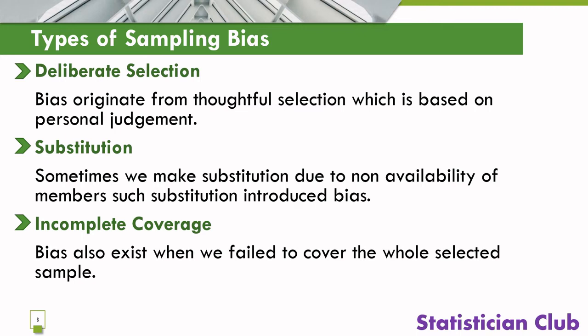Substitution: sometimes we make a substitute due to non-availability of members, and such a substitute introduces bias. Because if your substitute is not exactly like the member which you missed, bias will exist.